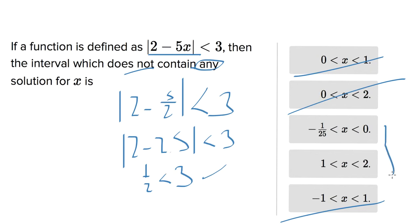And it's a little bit hard to see at first what value of x we can pick between negative 1/25th and 0, but a good value might be negative 1/50th. So if we did that we would get 2 minus 5 times 1 over 50, so the same thing as 5 over 50 within the absolute value signs being less than 3. So that's the same thing as saying 2 minus 1/10th.